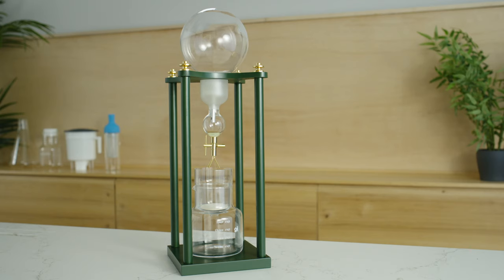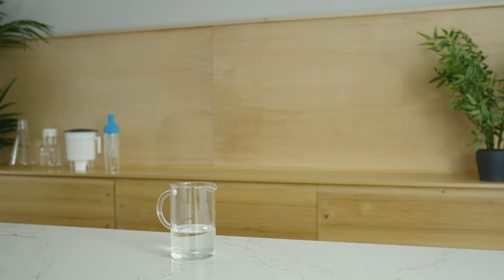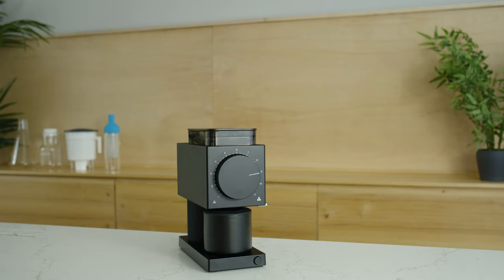Here's what you'll need: an OG Slow Drip Brewer, 245 grams of room temperature water, 35 grams of coffee, and a grinder. So let's get started.